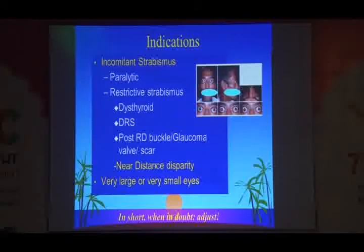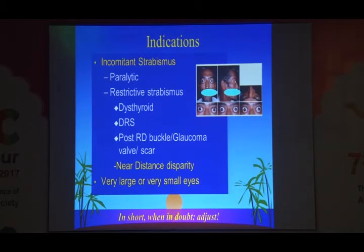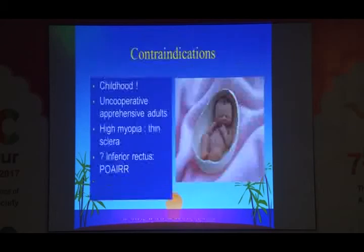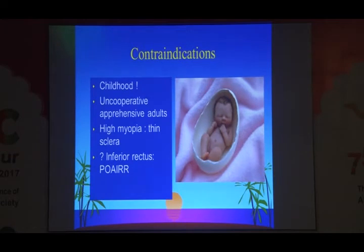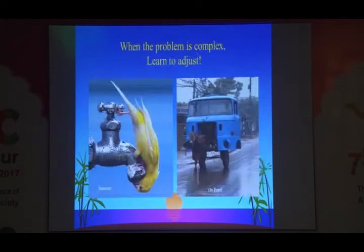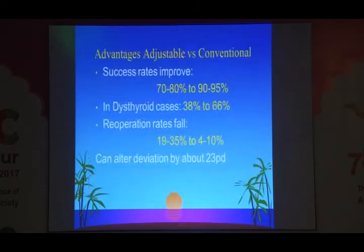Contraindications for adjustable procedures include childhood, uncooperative or apprehensive adults, high myopia, thin sclera, and inferior rectus having progressive overaction. When the problem is complex, learn to adjust. Advantages: you can improve outcomes from 70-80% to 95%. This is an example showing a sensory deviation which has been very well corrected. Compared to the standard recession procedure shown earlier, there are slight changes you need to make: you mark the position you want to recess, but you will pass your scleral bite leaving a margin for adjustment, coming towards the insertion rather than circumferential.